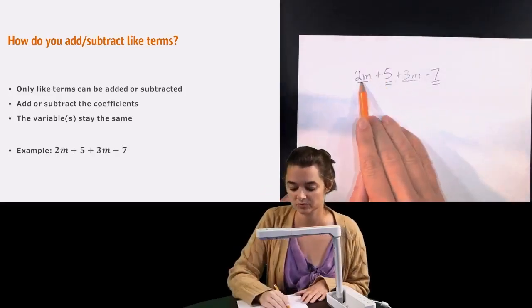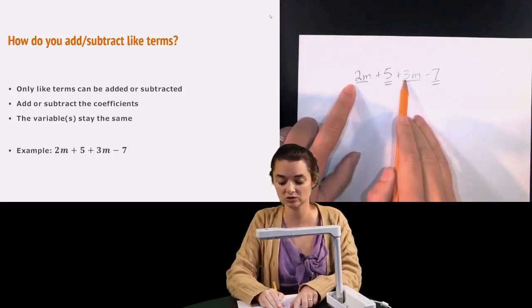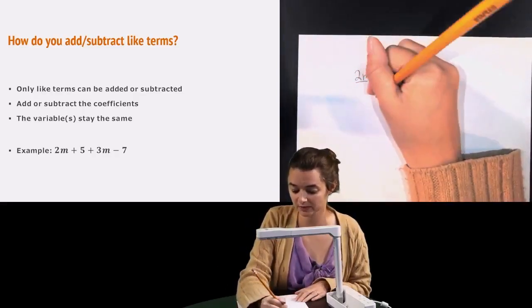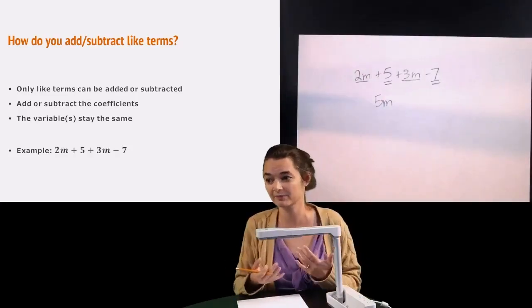So 2m plus 3m. If I want to add those, I would add the coefficients, which are 2 and 3. 2 plus 3 is 5. So 2m plus 3m is 5m. You'll notice it didn't become 5m squared. We kept the variable the same.